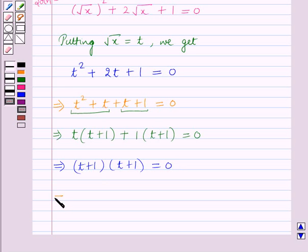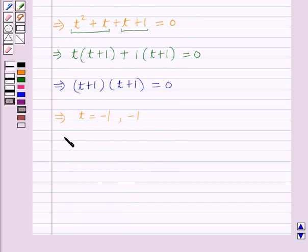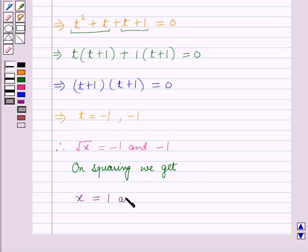This implies t = -1, and therefore √x = -1. On squaring, we get x = 1.